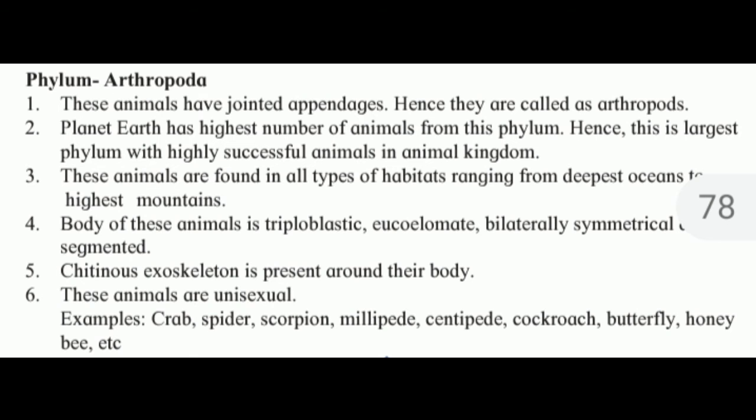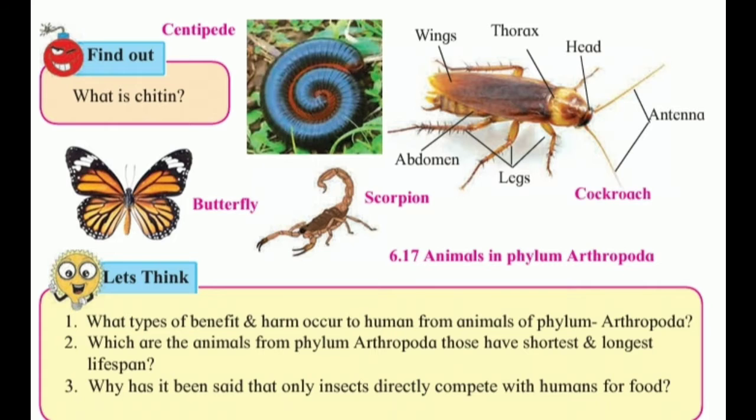Phylum Arthropoda: these animals have jointed appendages, hence they are known as arthropods. Planet Earth has the highest number of animals from this phylum. Hence, this is the largest phylum with the most highly successful animals in the animal kingdom.